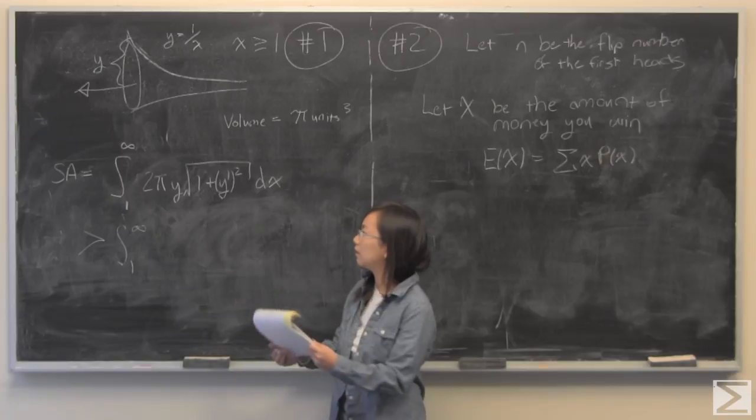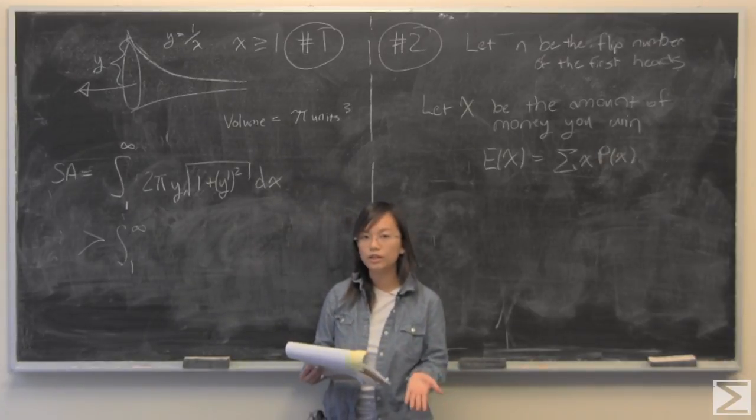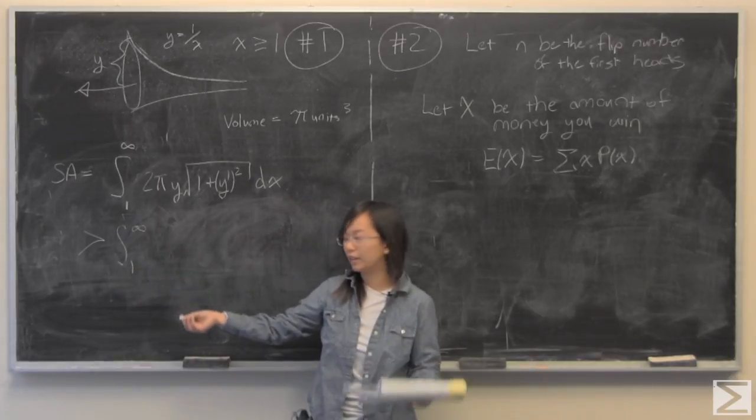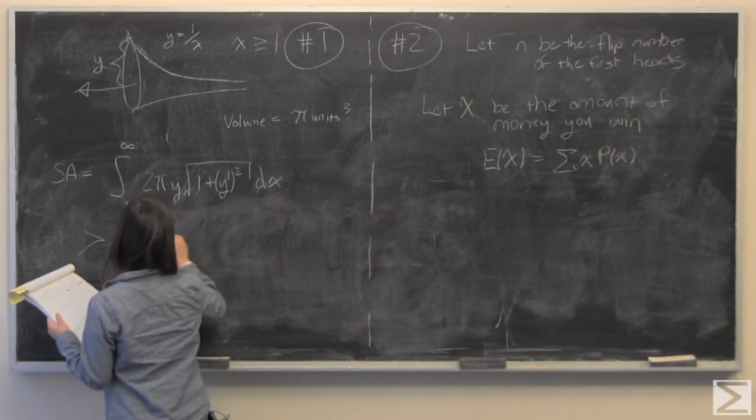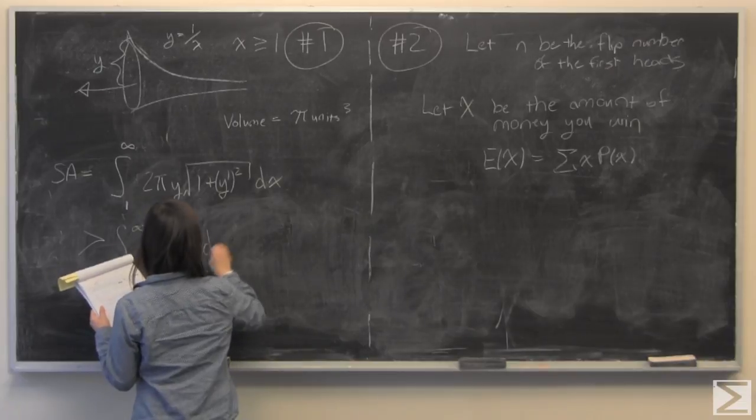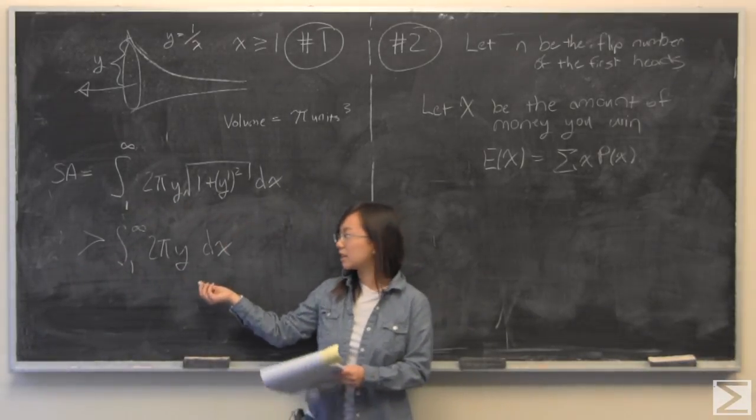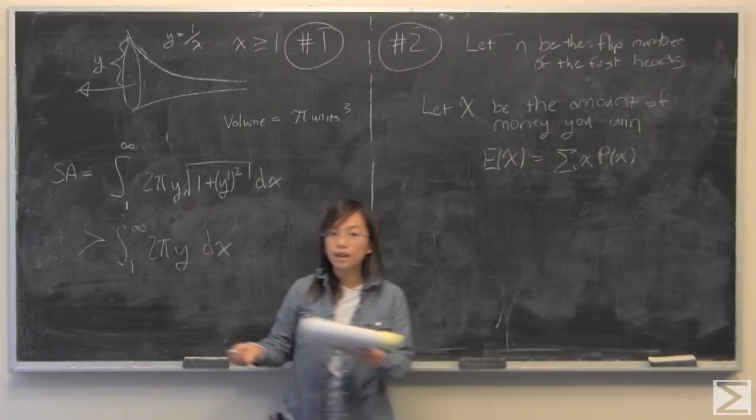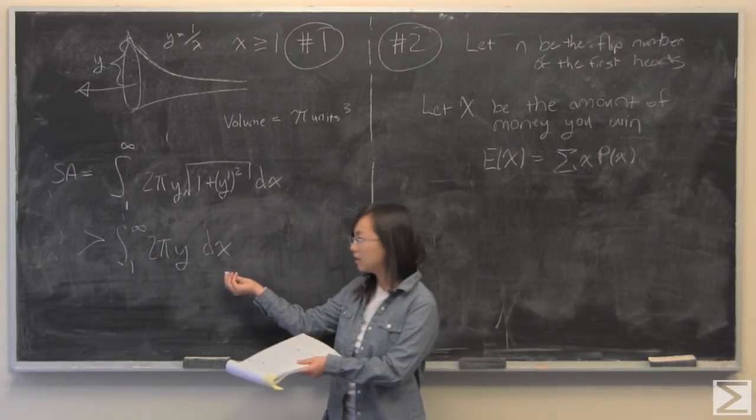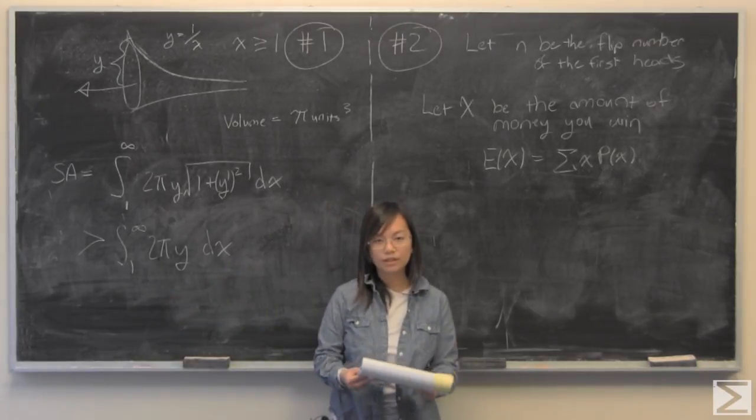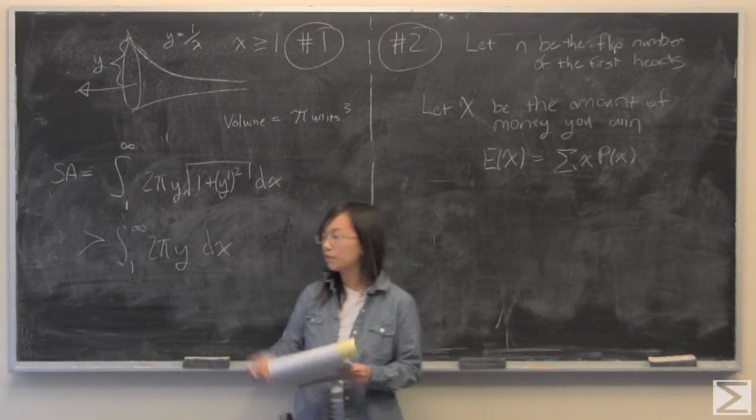And the reason why I can make that is because one plus, for our real numbers right here, one plus y prime squared is going to be greater than one. So this has to be greater, so this value of two pi y dx has to be less than this.